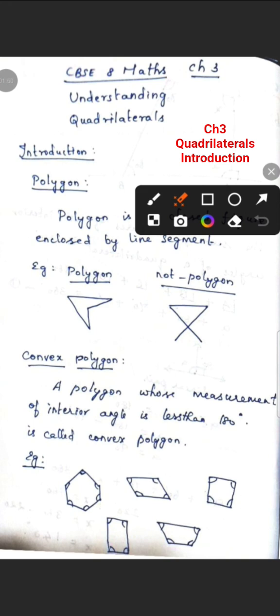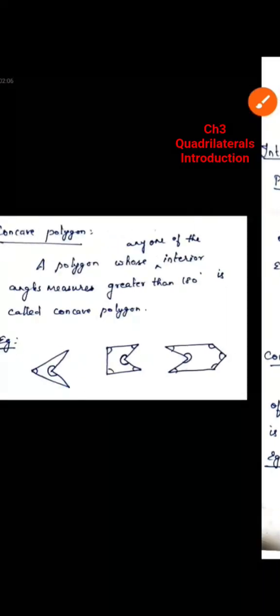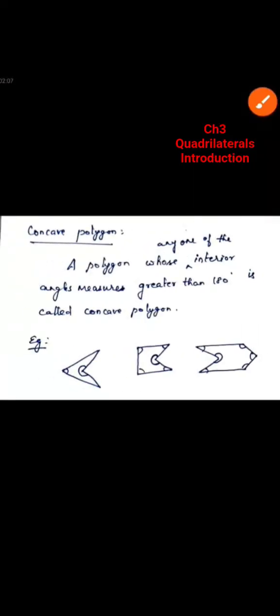Here, trapezium, rectangle, square, and parallelogram are given. See the inner angle of each diagram. If the inner angle is less than 180 degrees, the polygon is a convex polygon. Next, what is a concave polygon? See the diagram and see the inner angle of each diagram.